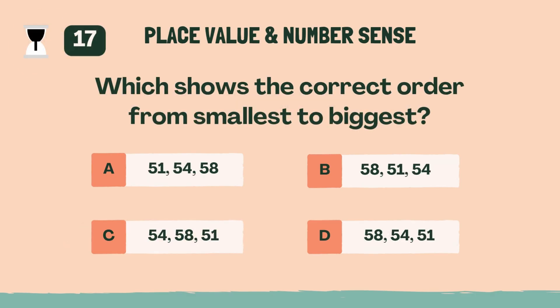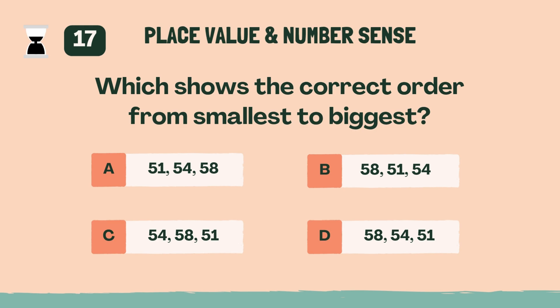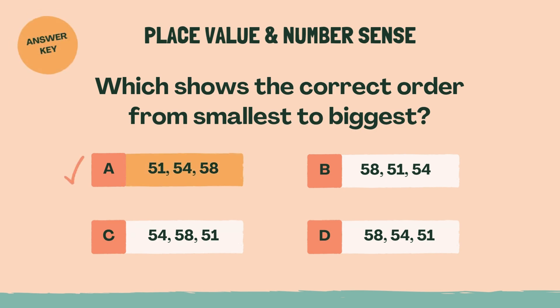Which shows the correct order from smallest to biggest? A, 51, 54, 58.